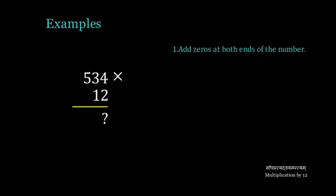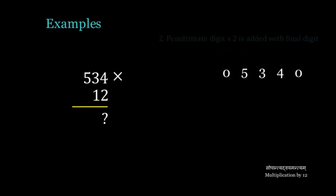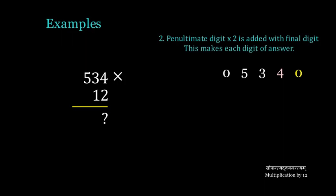534 multiplied by 12. Adding zeros at both ends, we get 0, 5, 3, 4, 0. The penultimate digit is 4. Double of 4 is 8, plus 0 is 8. Double of 3 is 6, plus 4 is 10 — we write 0 and carry 1. Double of 5 is 10, plus 3 is 13, plus the carried 1 is 14 — we write 4 and carry 1. Then 0 plus 5 plus 1, we get 6. So the answer of 534 multiplied by 12 is 6408.